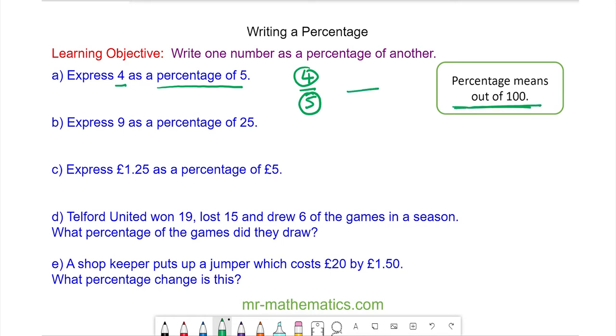So we're going to write 4 fifths over 100 by multiplying the numerator and denominator by 20, because 5 times 20 makes 100 and 4 times 20 is 80, so we have 80%. This means that 4 is 80% of 5.